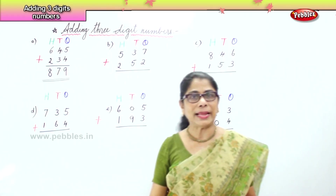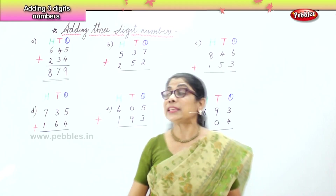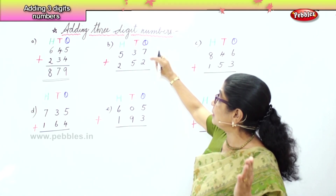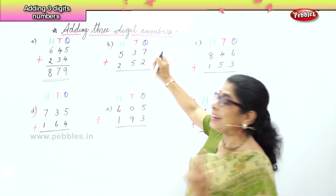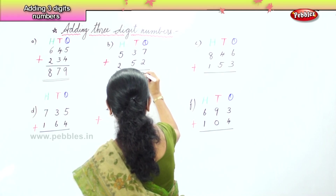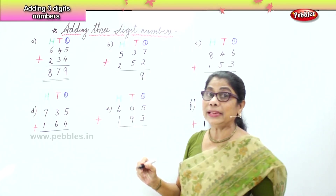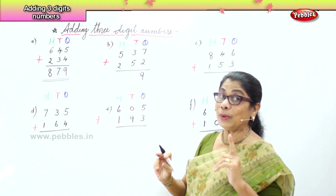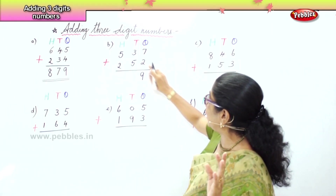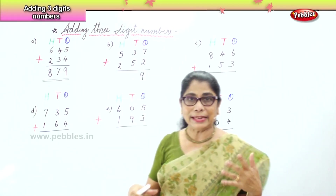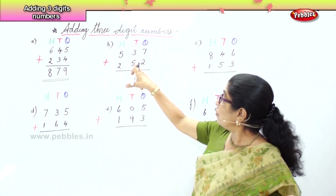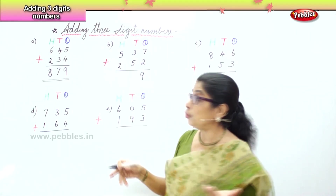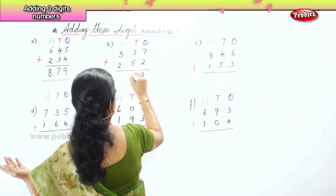We are adding the ones: seven ones and two ones. What is seven plus two? Nine ones. We can have nine in the ones place because it is nine ones. If it were ten ones, it would become one ten. Now we add the tens. In the tens place you have five tens and three tens. What is five plus three? Eight — so you have eight tens in the tens place.